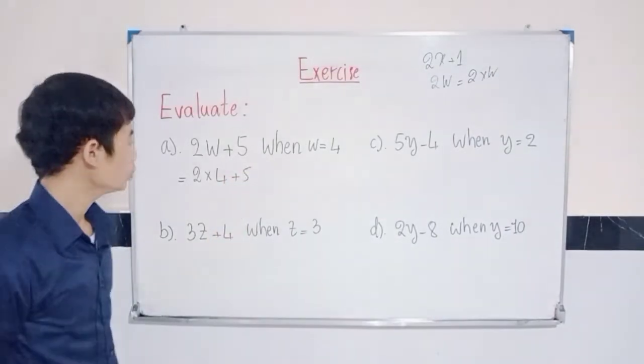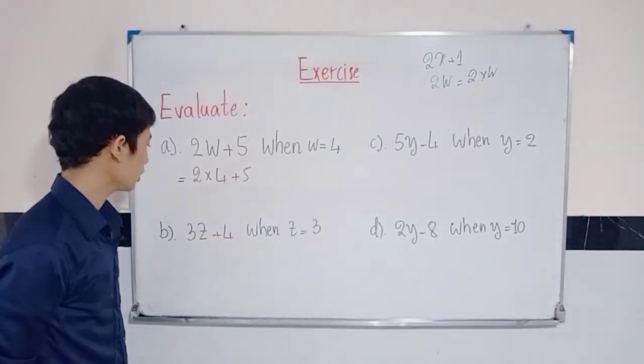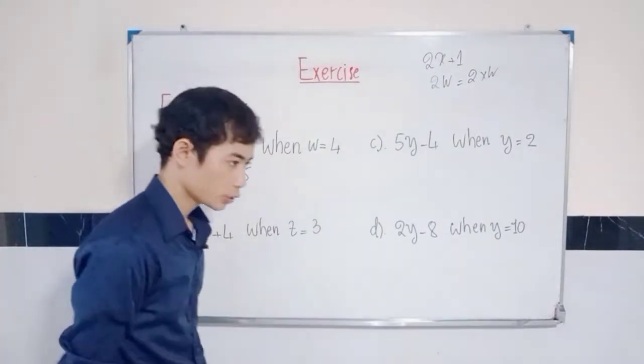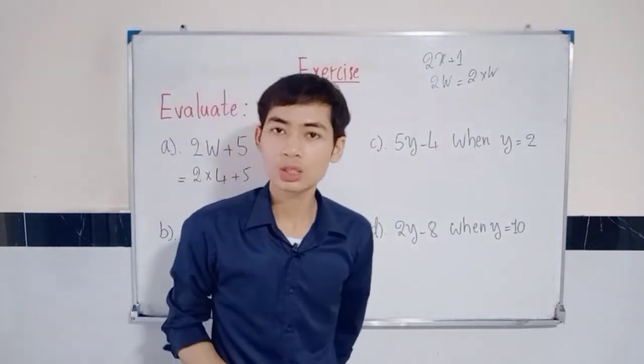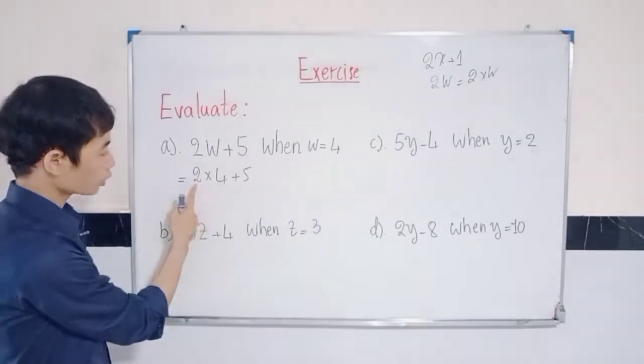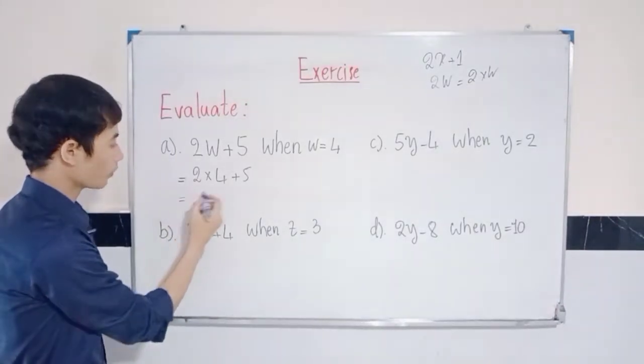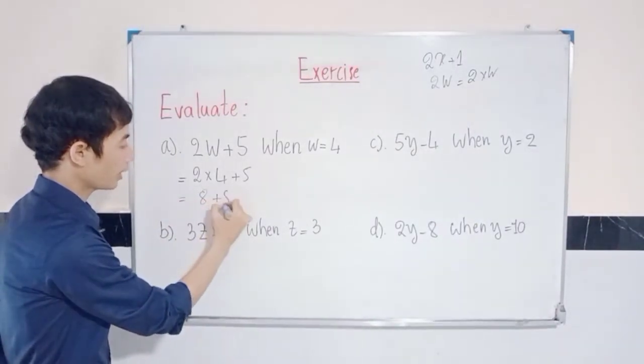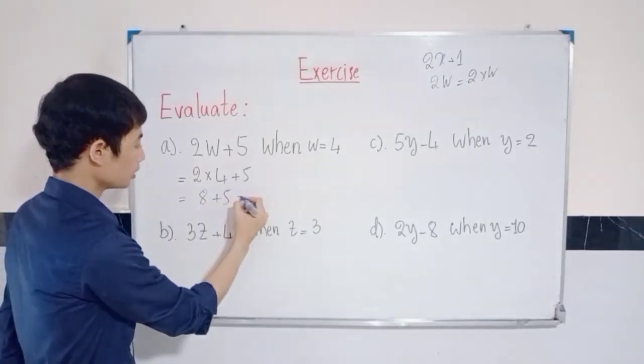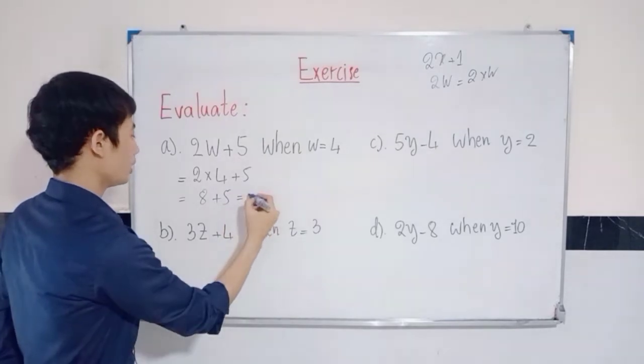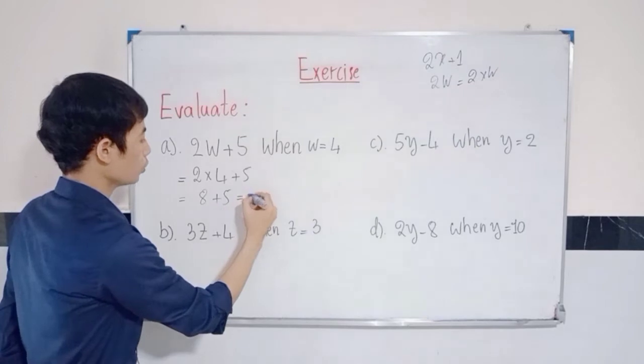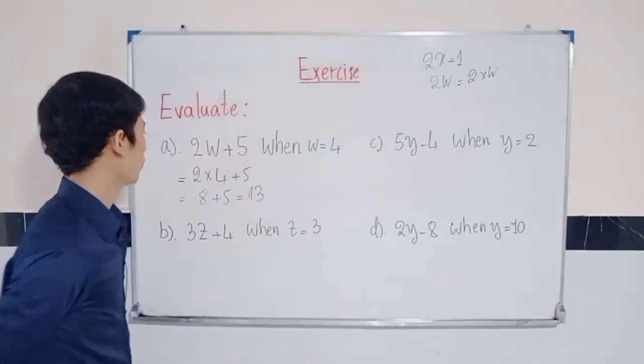You need to remember the rule of operation. If we have multiplication and addition, you need to do the multiplication first. So, 2 times 4 is 8 plus 5. Next, you can do addition: 8 plus 5 is equal to 13. Finish for question A.